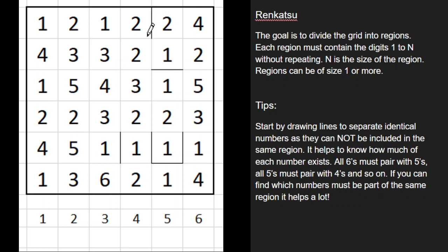All these 1s here obviously cannot be part of the same region, otherwise they would repeat, so I'm drawing border lines between them to separate them. Same thing with these 2's up here, and these 2's, and these 3's. That's a good start. The next thing I would do is count the number of each digit, because it's going to help tell you how many different regions there are of each size.